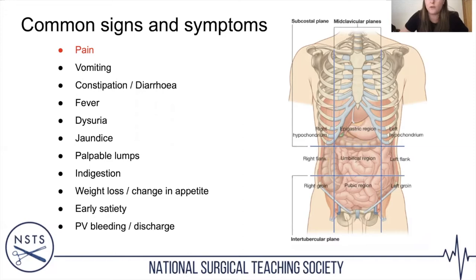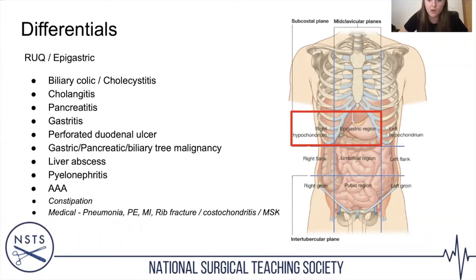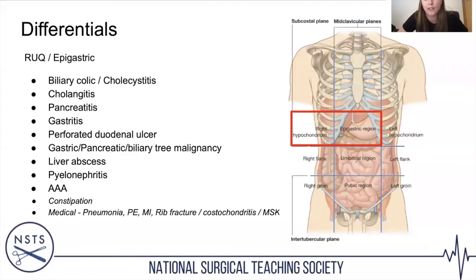Breaking it down by region — I've grouped right upper quadrant and epigastric pain together as they often coexist. Differentials include biliary colic, cholecystitis, cholangitis (obstruction in the biliary tree causing infection), pancreatitis, gastritis, perforated duodenal ulcer, malignancies (sometimes presenting with a palpable mass), and liver abscesses.